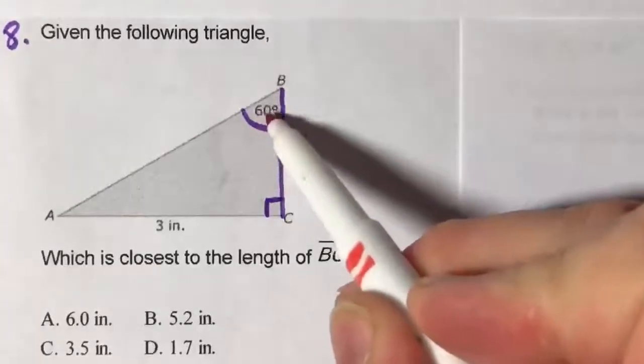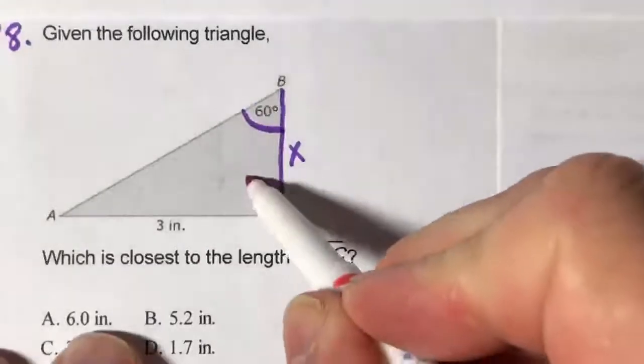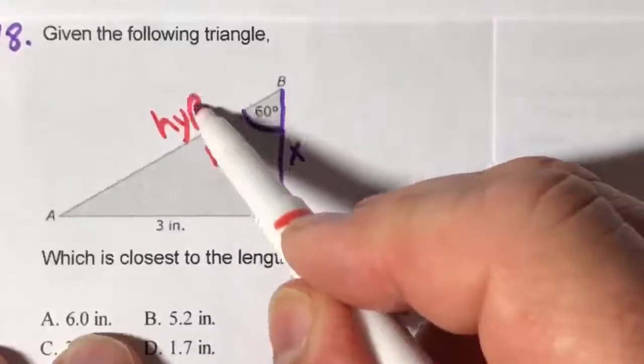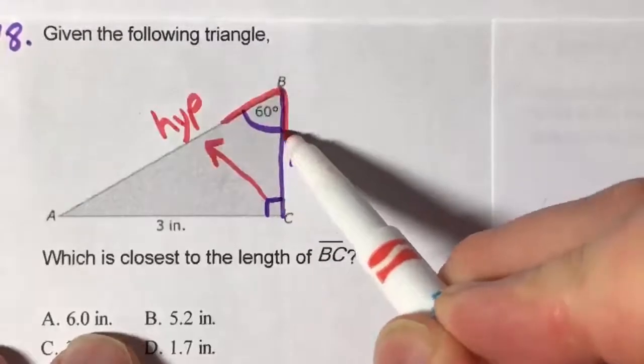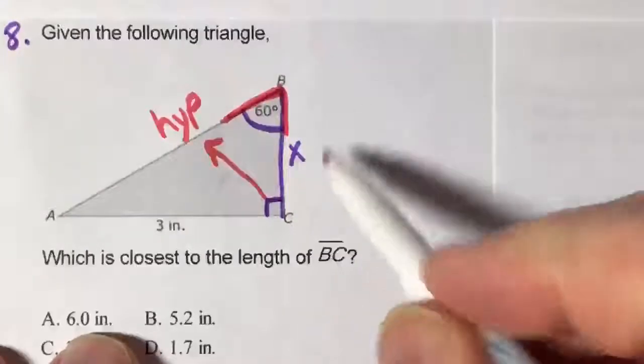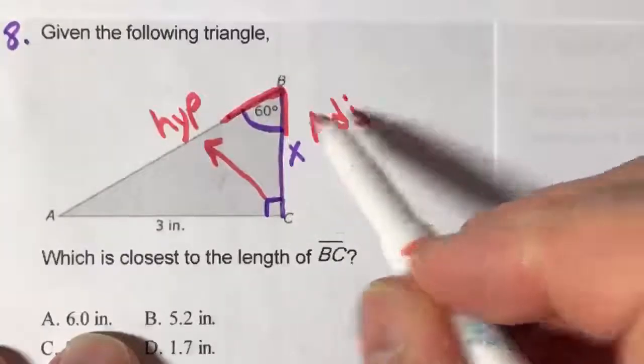So I want to get my hypotenuse labeled. This side here, and this side here that forms the acute angle, gives us the adjacent. That side is adjacent and this is hypotenuse.